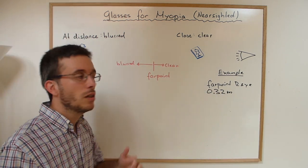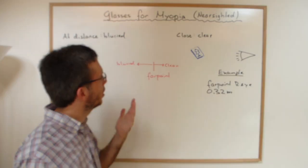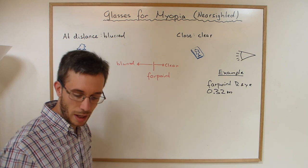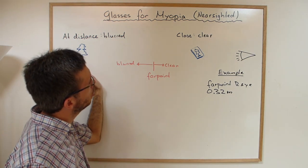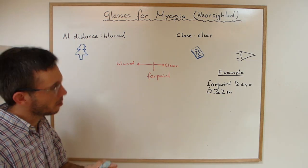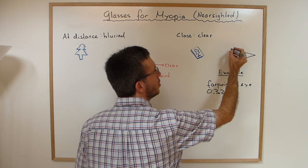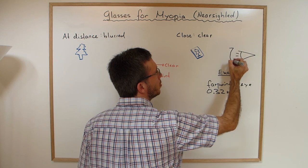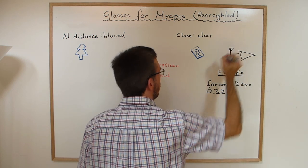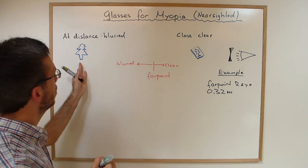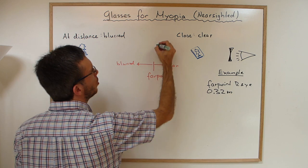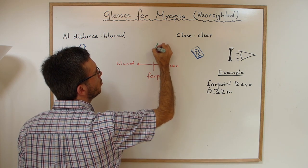Now, what are my glasses doing? My glasses create an image of the distant object I can't see clearly, and they create the image closer than my far point. So I need glasses that will create an image, in this case of the tree, so that it's closer than my far point. Then I can see the tree clearly.